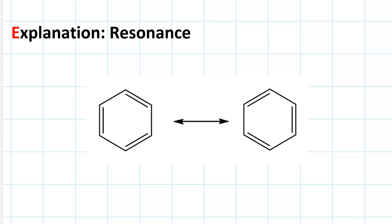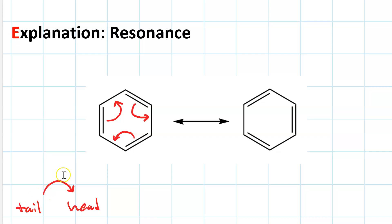There are two possible resonance structures of benzene. Note the difference in location of the pi bonds. These two structures are connected by curved arrows. The tail of the curved arrow is where it begins, the head is where it ends up. When it has a double barb on it, it represents the movement of two electrons. Each of these curved arrows is moving a pi bond from one set of carbons to the adjacent set.